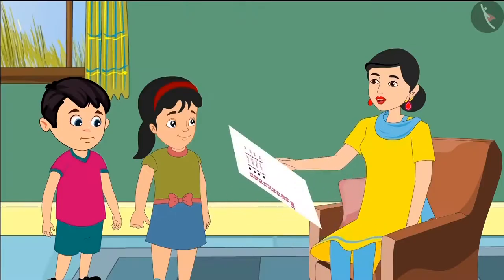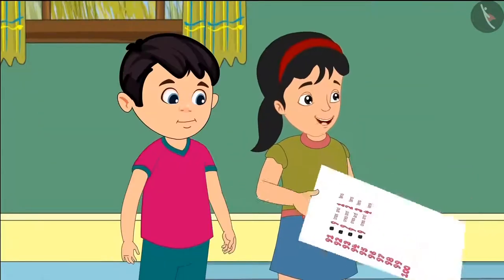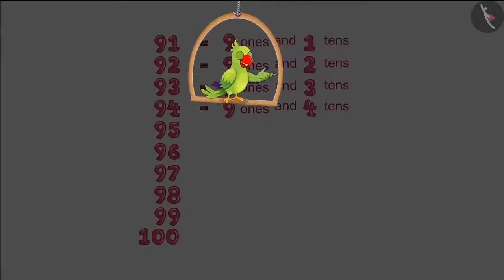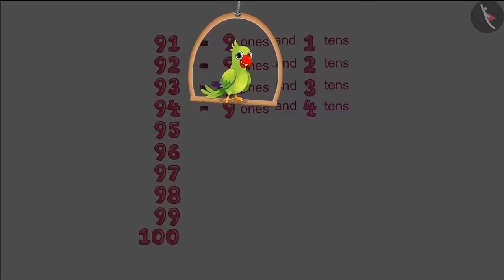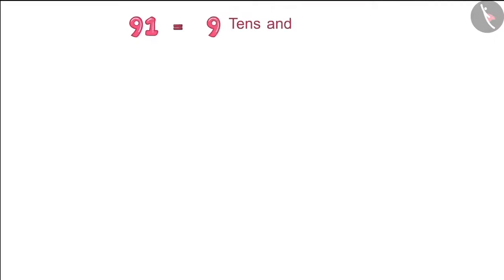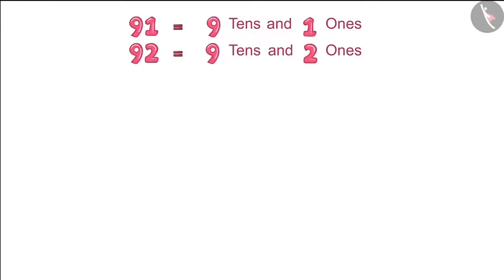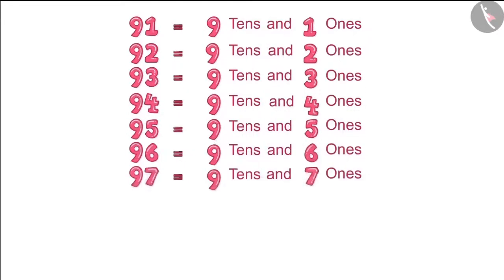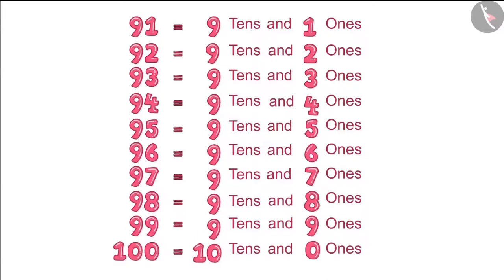Their mother says, take this and just fix it up. Okay, Mommy! Shotu and Pinky then corrected their charts. Now it is written that there are nine tens and one ones in 91, then there are nine tens and two ones in 92, and just like that they corrected all the numbers and wrote them down.